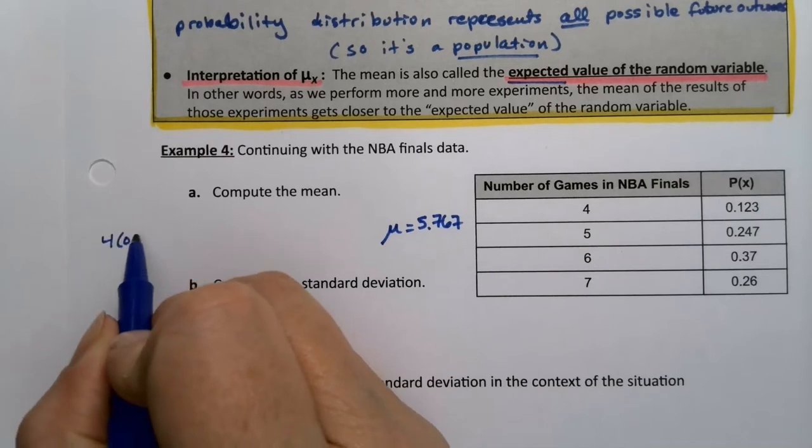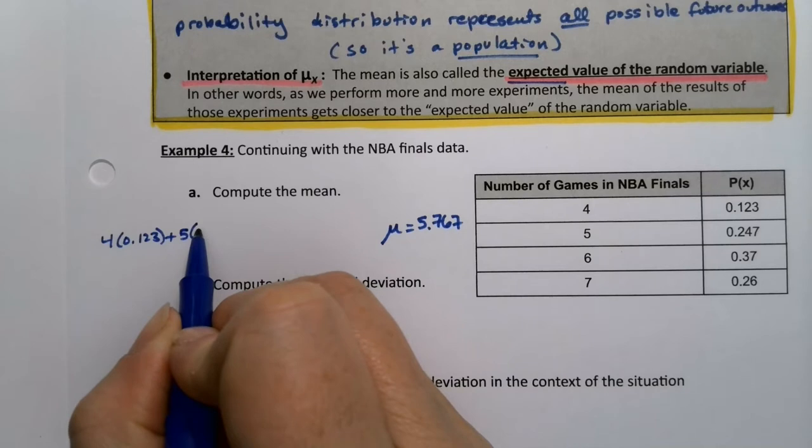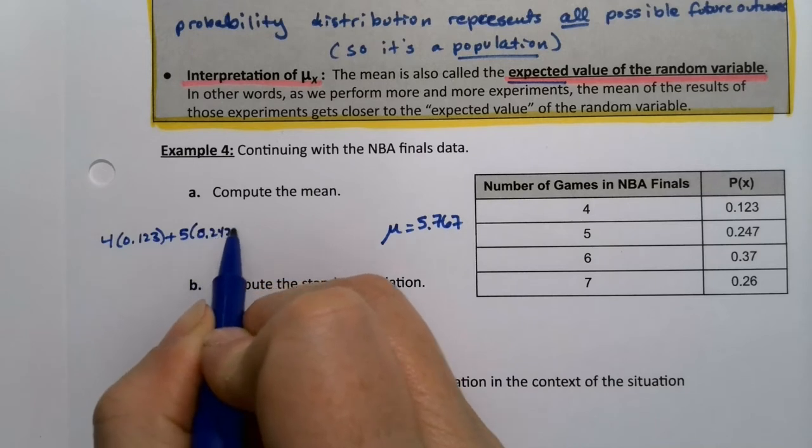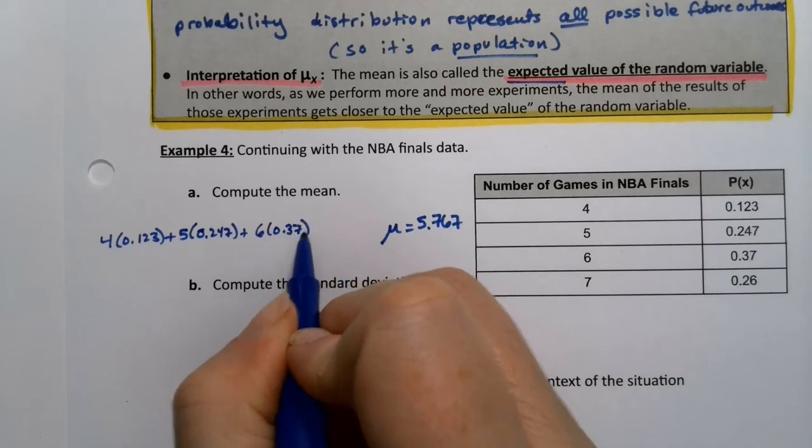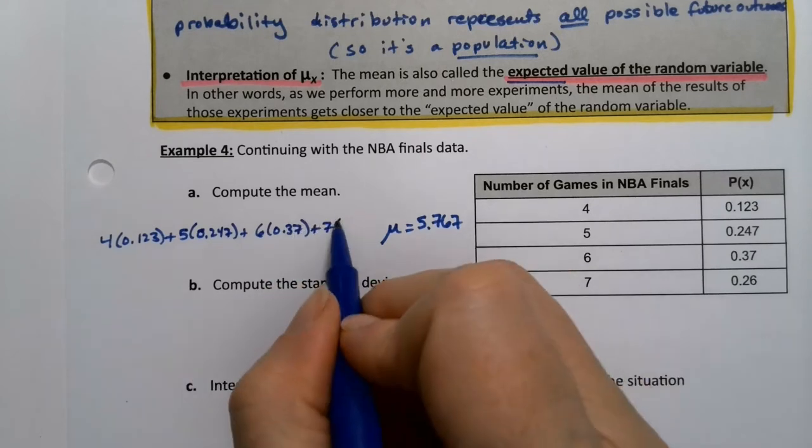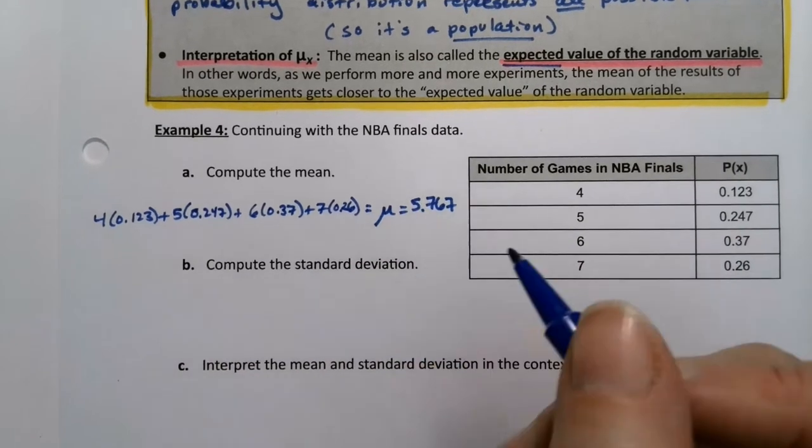And again, if you want to write down the by-hand formula, that's fine. You might come in handy every once in a while. So it's 4 times 0.123, 5 times 0.247, plus 6 times 0.37, plus 7 times 0.26. It's not a particularly difficult calculation, and there we know what it is.